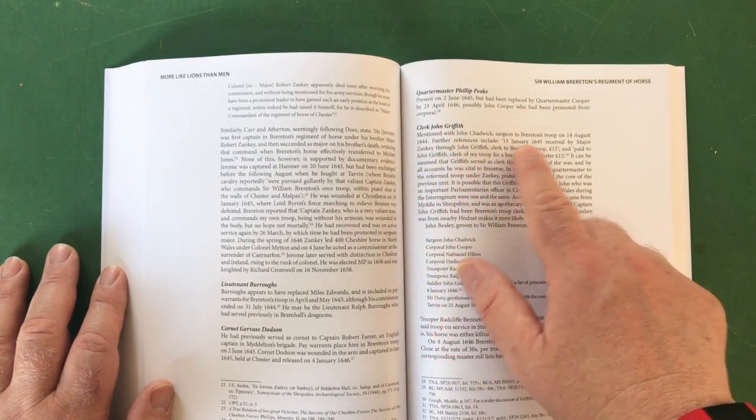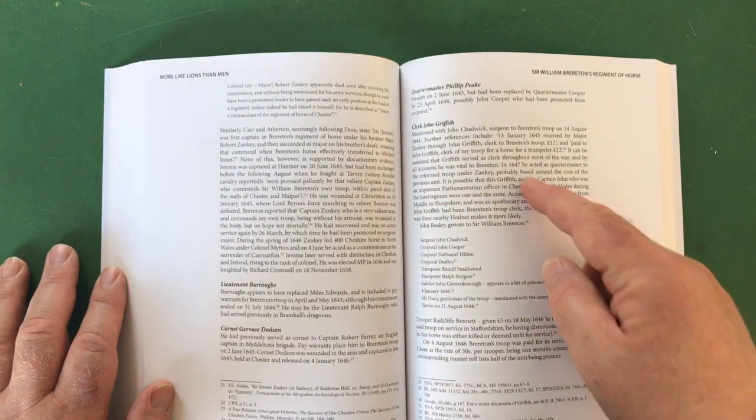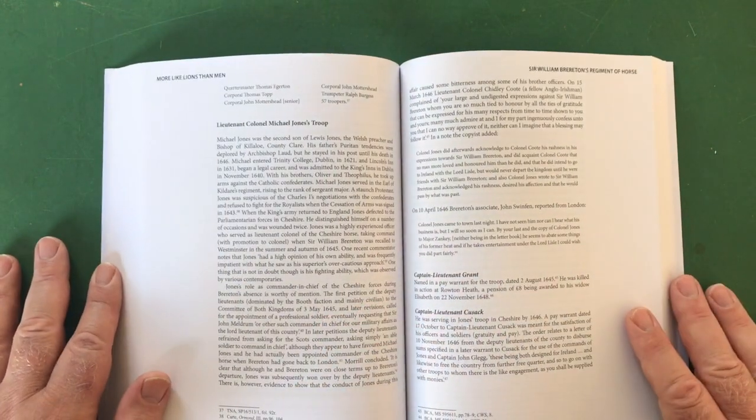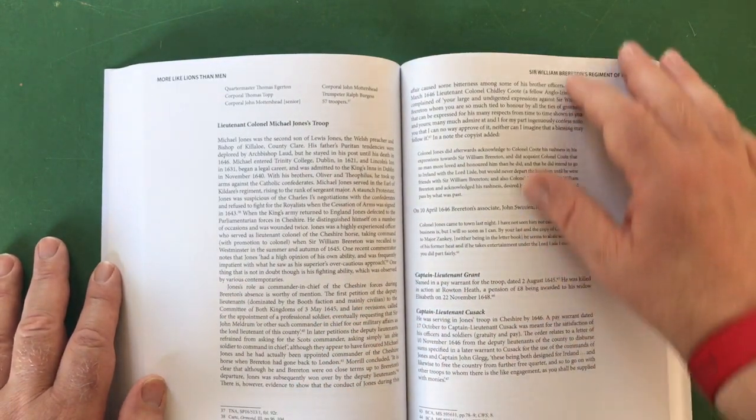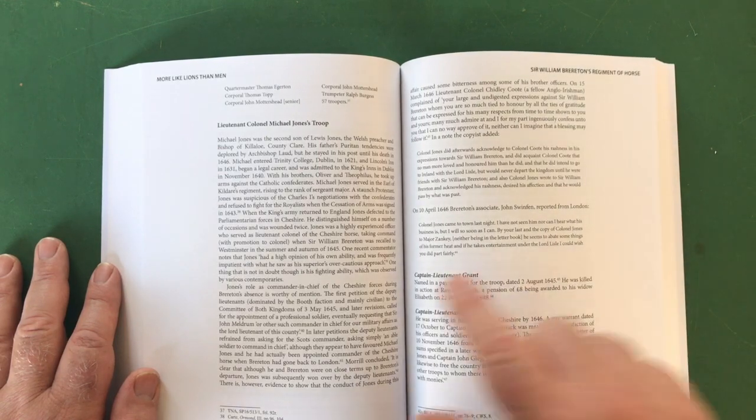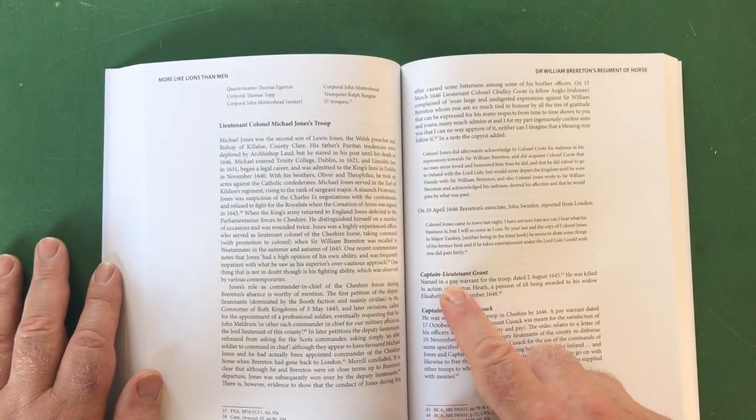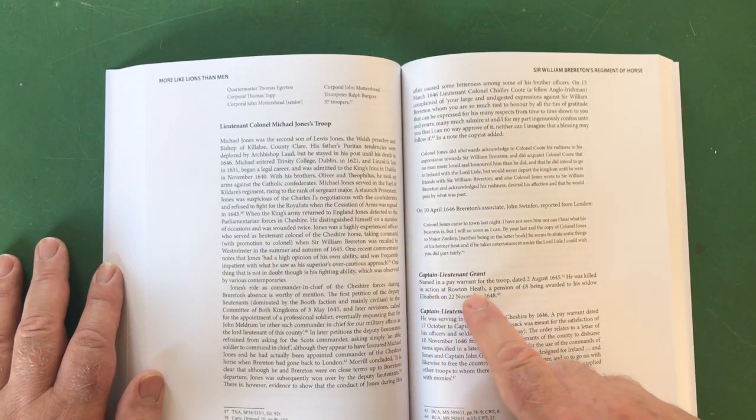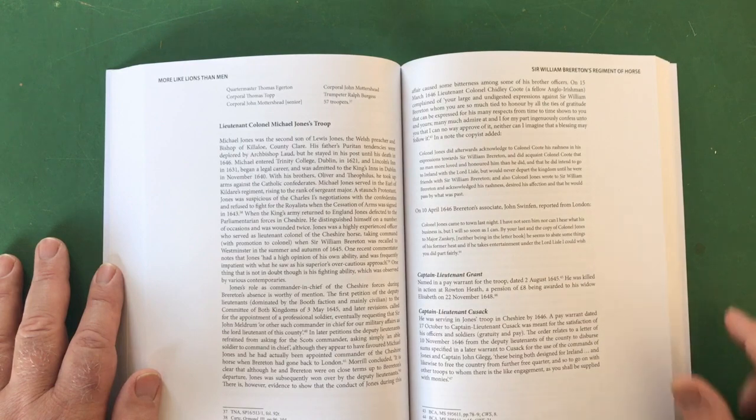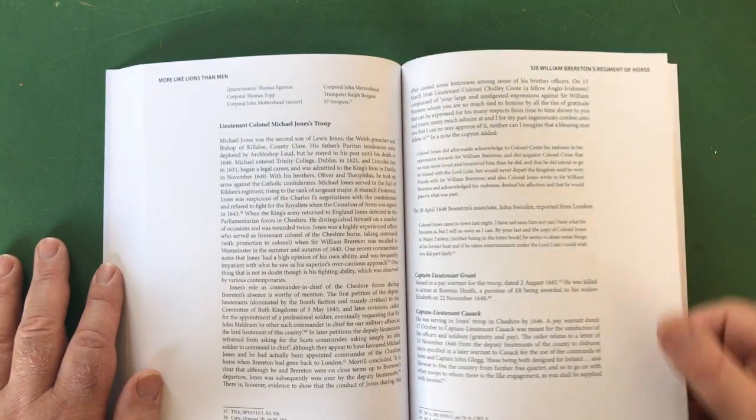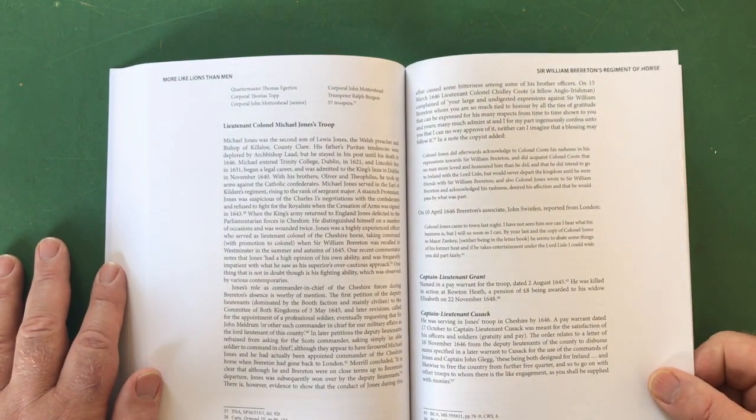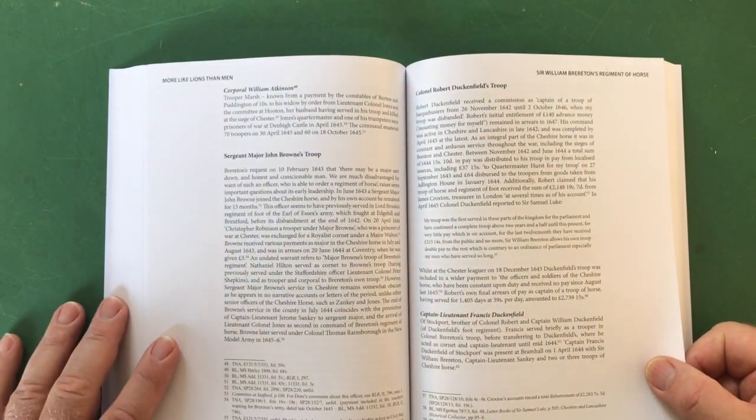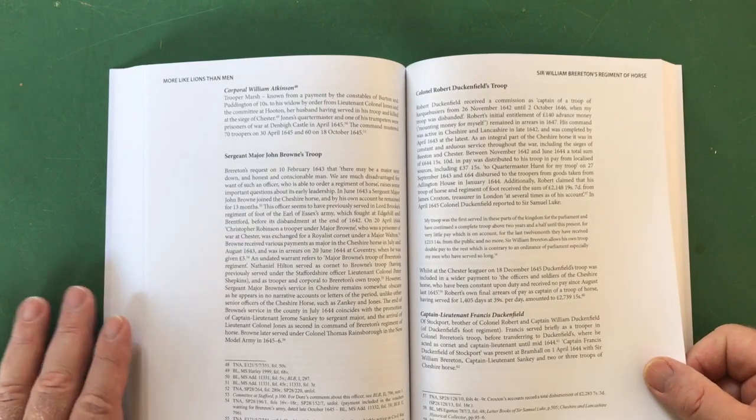This is again fascinating. You've got these personalities - the individual troop commanders named in this book and the raising of their particular subunits. This is incredible stuff. Clark John Griffith, Griffith mentioned with John Chadwick, surgeon to Brereton's troop on 16th of August 1644, various references to him, the various other people associated with them. A bit of biography where we have some biography for them: Captain Lieutenant Grant, named in a pay warrant for the troop dated the 2nd of August 1645. He was killed in action at Rowton Heath. A pension of eight pounds being awarded to his widow Elizabeth on the 22nd of November 1648. These people come alive, they're jumping off the page.